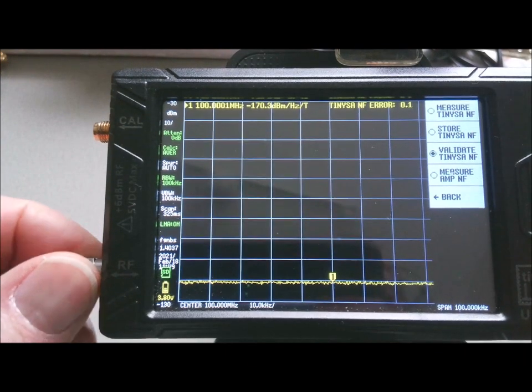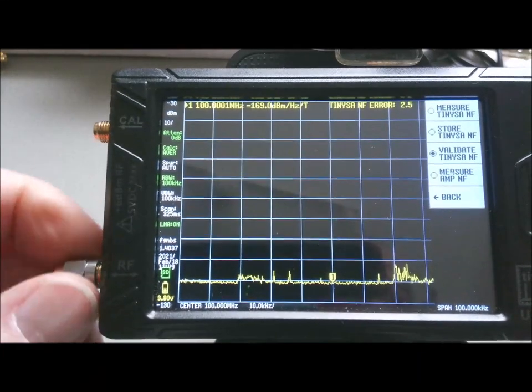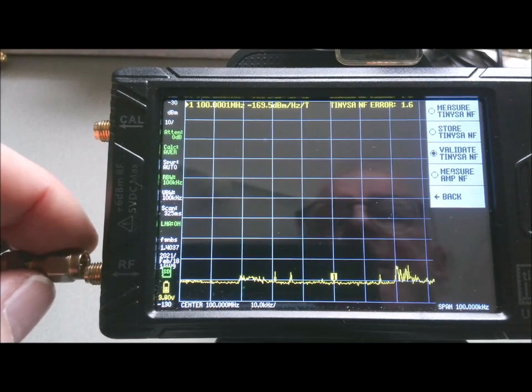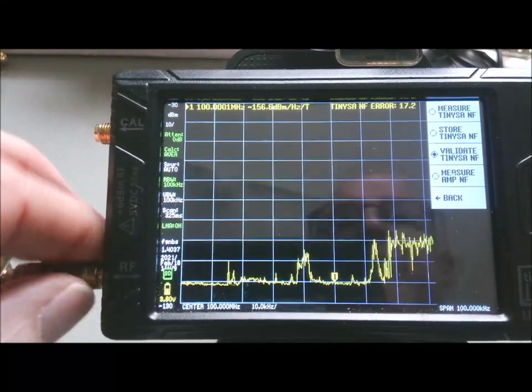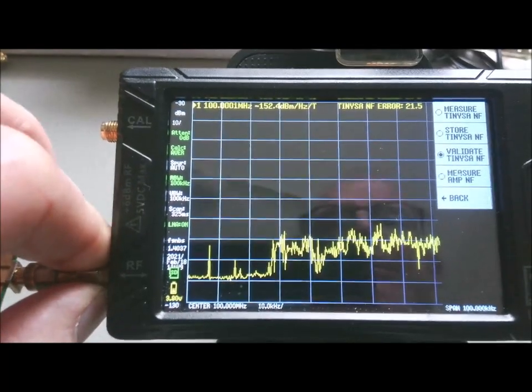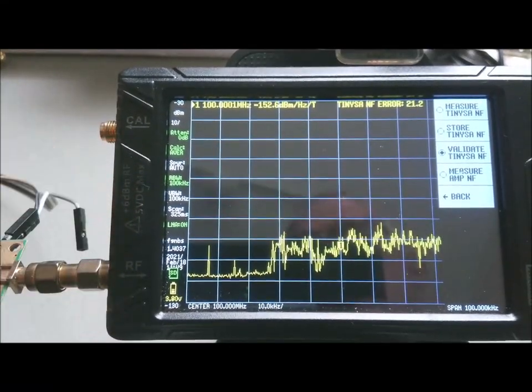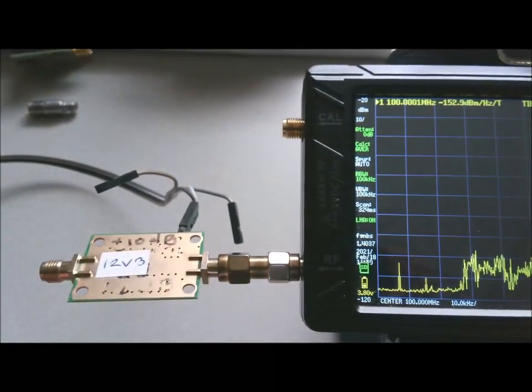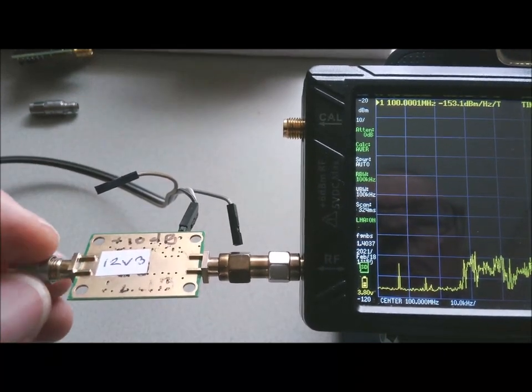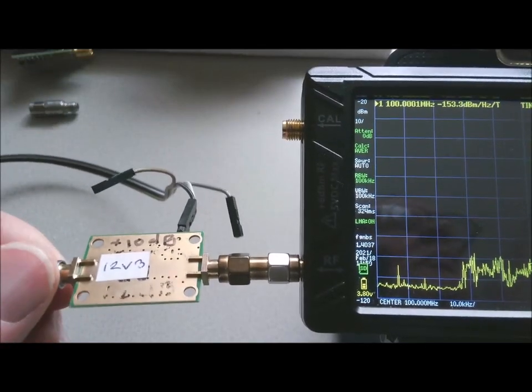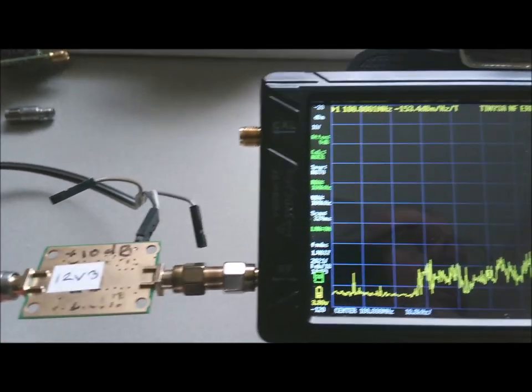The next step is to remove the load and then connect the amplifier to be measured. It's very important that the gain of this amplifier is measured before we start to do this measurement, as the gain has a big impact on the measurement. At the input of the amplifier, we do connect the 50 ohm load, because the noise of that amplifier depends on the input impedance it sees.